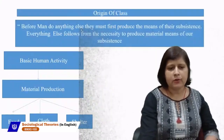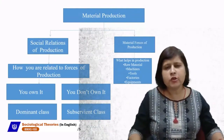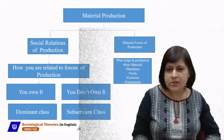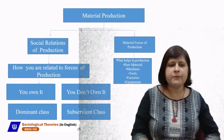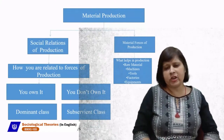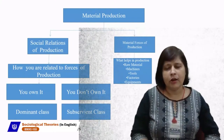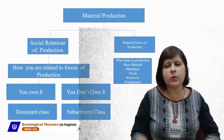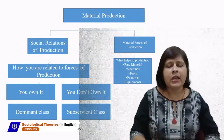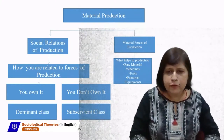Material production is responsible for the origin of classes. There are two factors responsible for material production. The first is material forces of production, or means of production. Means of production includes what helps in production: raw material, machines, tools, factories, equipment, lands — all these are means of production or material forces of production.